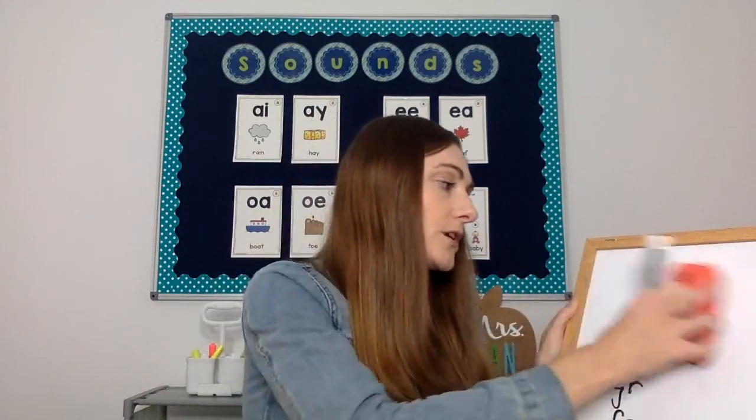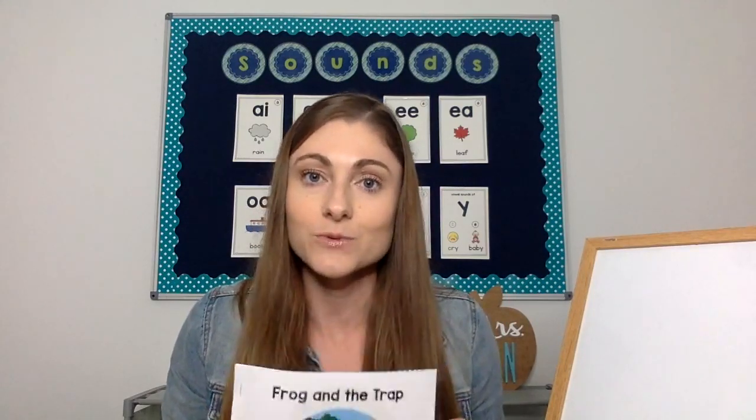Kids don't necessarily need to memorize all the blends, but they need to become proficient at blending the sounds to read them. This is typically a step after kids can read CVC words — for example, 'had' — and then we add another letter: 'trap,' now a four-phoneme word. For this lesson, we're assuming the kids have already been introduced to R blends.